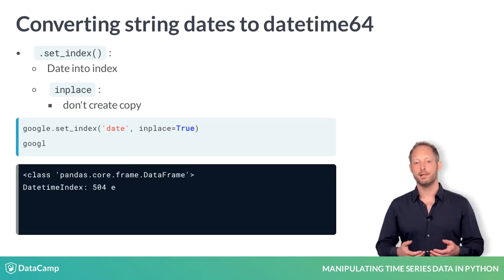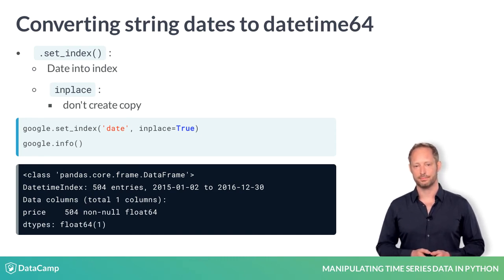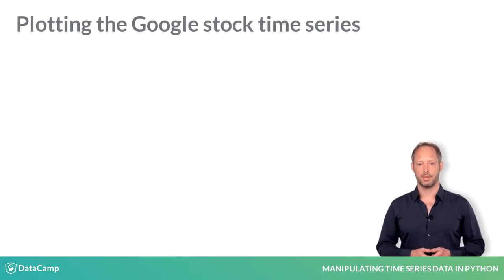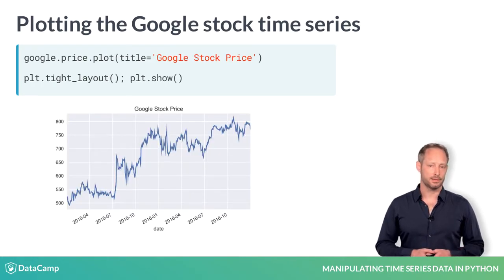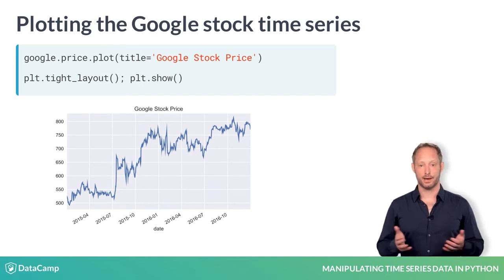The resulting DateTime index lets you treat the entire DataFrame as time series data. Plotting the stock price shows that Google has been doing well over these two years. It also shows that with the DateTime index, Pandas automatically creates reasonably spaced date labels for the X axis.